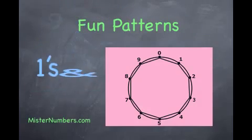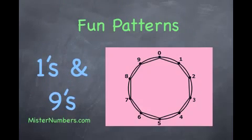The patterns for the ones and the nines create a simple ten-sided figure called a decagon. The nines will create the ones decagon backwards.